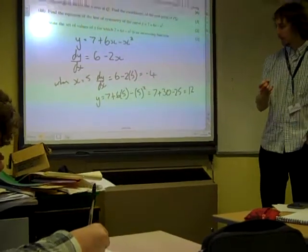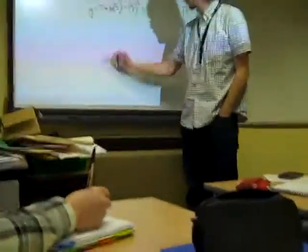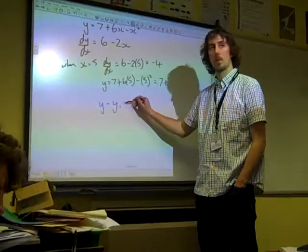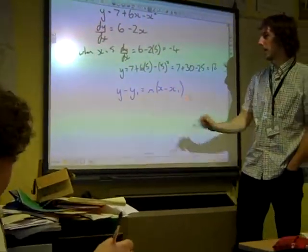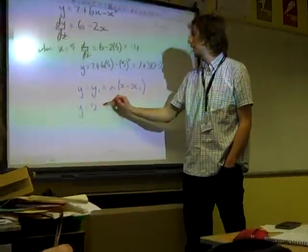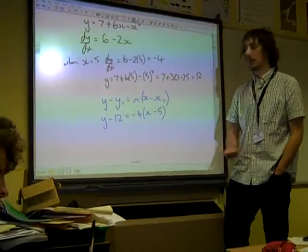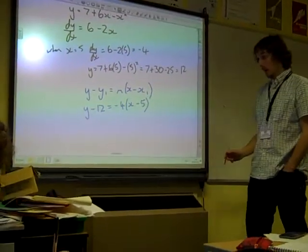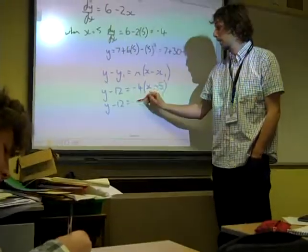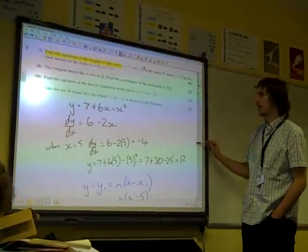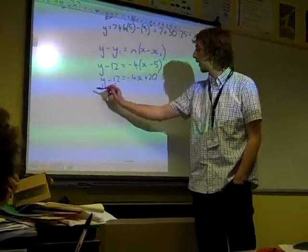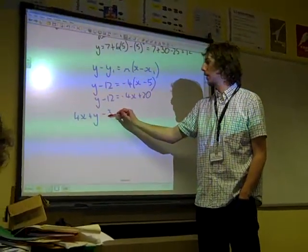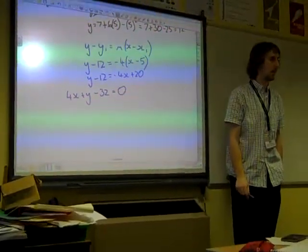What do we do now? We've got x is 5, y is 12, gradient is -4. Put it into the equation. Which equation? y - y₁ = m(x - x₁). We're going to sub it in. So we've got y - 12 = -4(x - 5). That's -4x + 20. And what form did they want it? They wanted everything on one side, ax + 2by + c = 0. So 4x + y - 32 = 0.